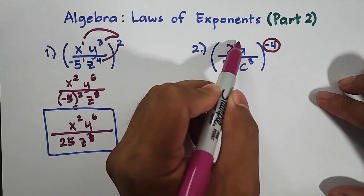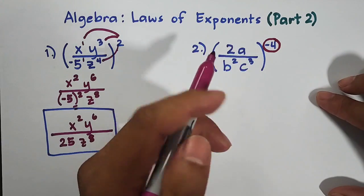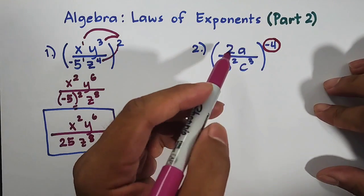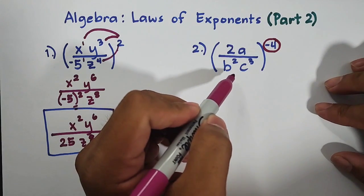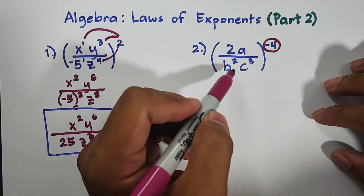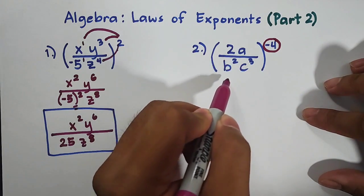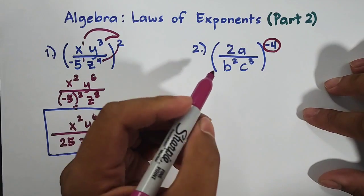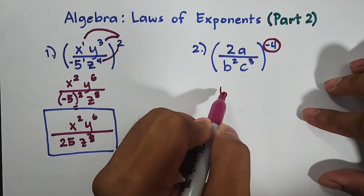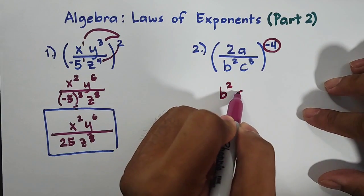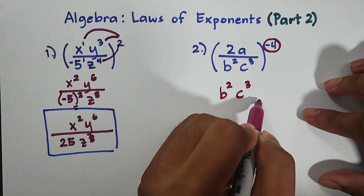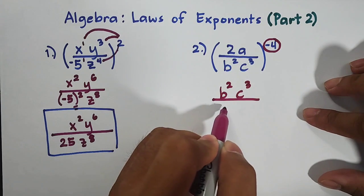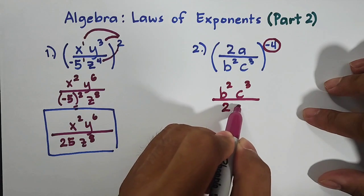So you need to flip or get the reciprocal of this expression. When we say the reciprocal, we need to interchange the position of your numerator and denominator. So it will go like this. Here, your denominator will become your new numerator. It will become b squared c cubed over your numerator will become the denominator, 2a.